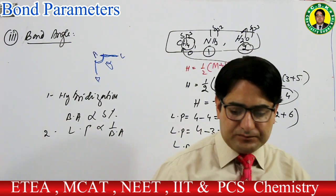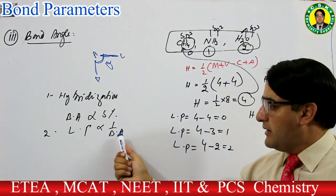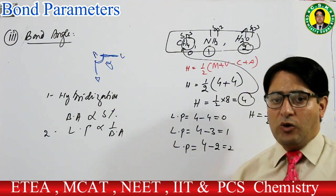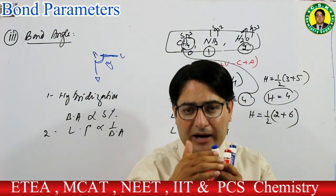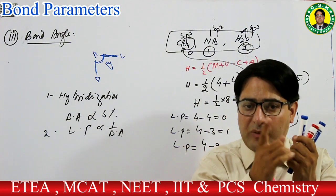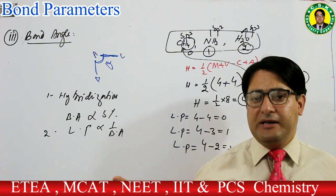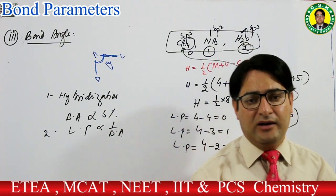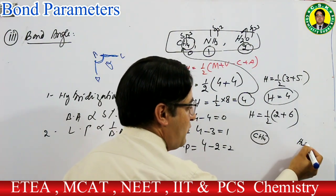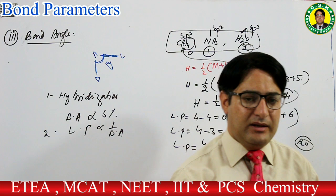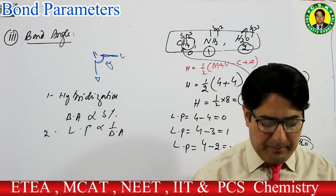Lone pair زیادہ ہوں گے تو bond angle کم ہوگا۔ Water میں 2 lone pairs — سب سے کم bond angle۔ Ammonia میں 1 — درمیان میں۔ Methane میں 0 — سب سے زیادہ bond angle۔ Order: methane > ammonia > water۔